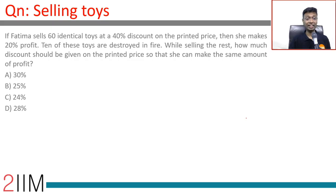If Fatima sells 60 identical toys at a 40% discount on the printed price then she makes 20% profit.